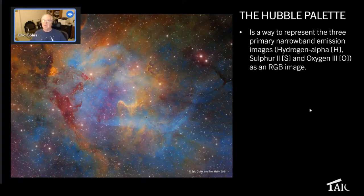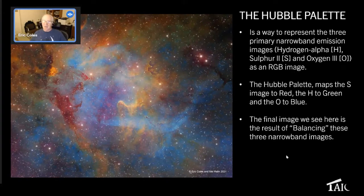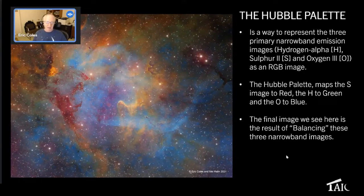So this is the Hubble palette mapping, and the final image is a balancing of those three channels. The problem is that most emission nebulas are primarily containing hydrogen, so the emissions you get are primarily hydrogen. If you map that to green, your image is going to be green. You have to have a way of balancing that, and this balancing system is what I'm going to discuss tonight.